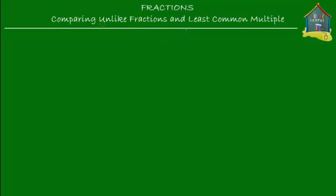Before I tell you what unlike fractions are, let me first tell you what like fractions are. Like fractions are fractions that have the same denominator. For example, one-fifth and two-fifth are like fractions because they have the same denominator, which is five.